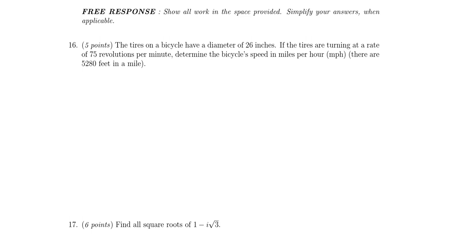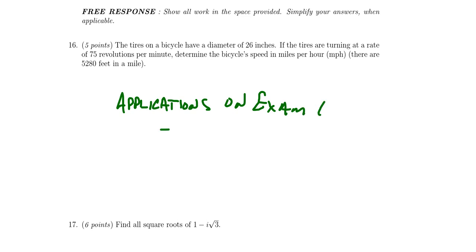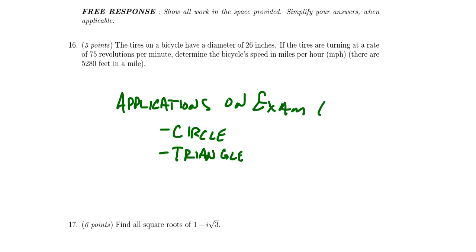Question number sixteen will be about applications — story problems from exam one. These include circle applications like finding arc length, area of a sector, or in this example, finding the linear velocity translated from the angular velocity. We also did story problems involving triangles — how tall is that tree or building, angles of inclination, and so on. On exam one specifically, question thirteen was about triangle applications and question fifteen was about circle applications. Be prepared to answer one of those types of story problems.